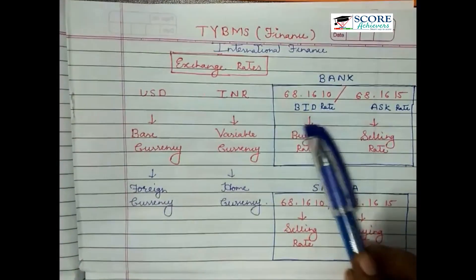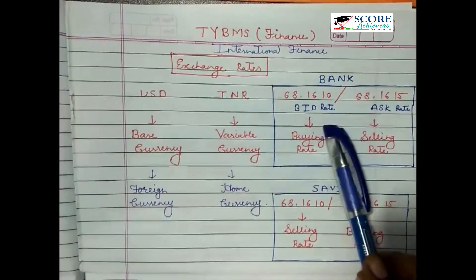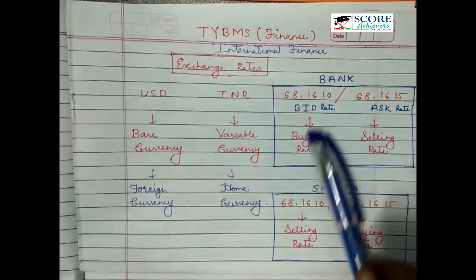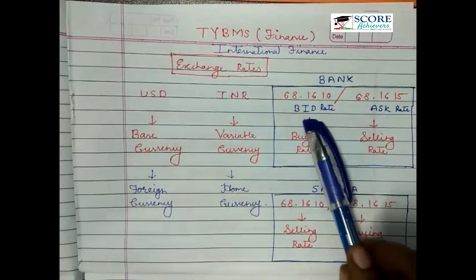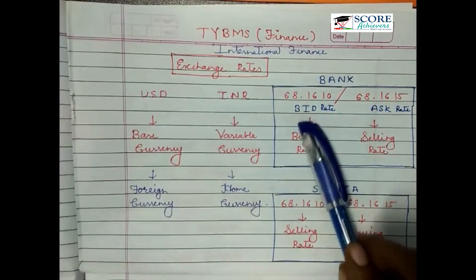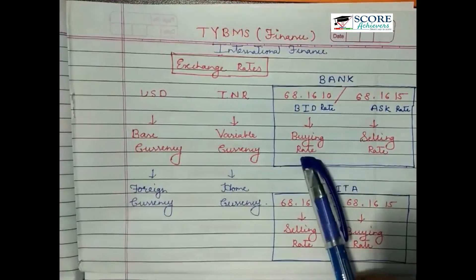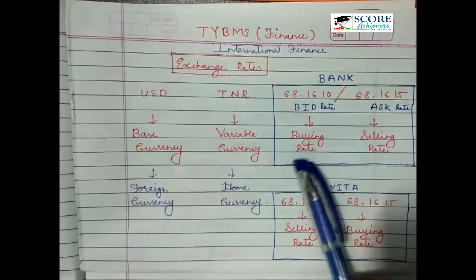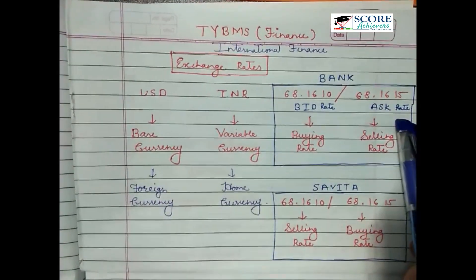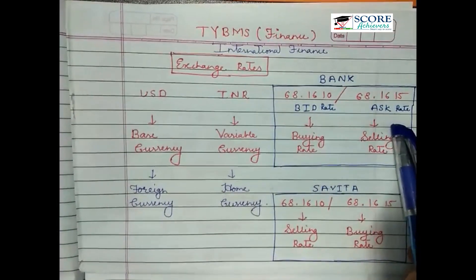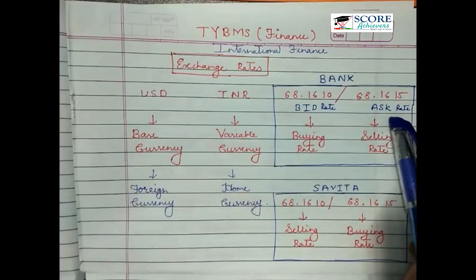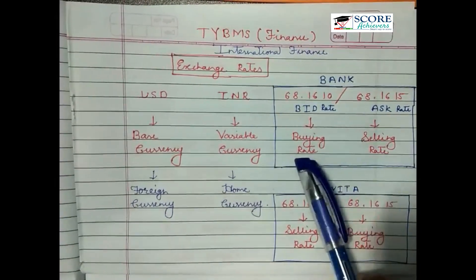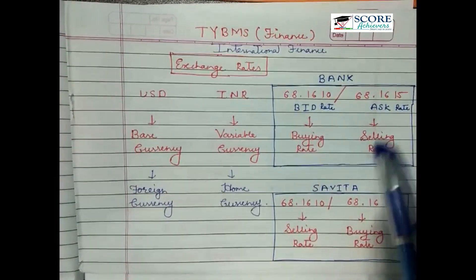They have given you two rates. Always the first rate will be your bid rate. Bid rate means the buying rate — it is easy to remember that B stands for bid, B stands for buying. So the bid rate is the buying rate, and the second rate specified is always called the ask rate. The ask rate is the selling rate.